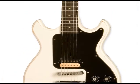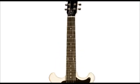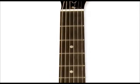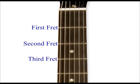Frets are the metal bars on the neck of the guitar, and they are numbered from bottom to top: one, two, three, and so on.